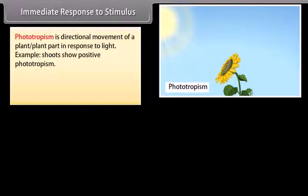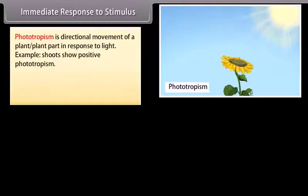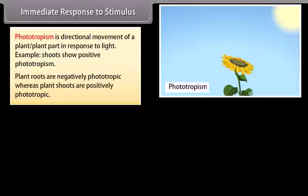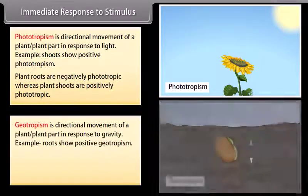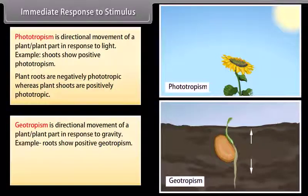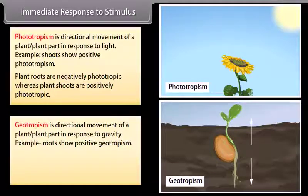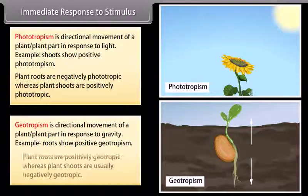Phototropism is the directional movement of a plant or plant part in response to light. Geotropism is the directional movement of a plant or plant part in response to gravity. Example: roots show positive geotropism. Plant roots are positively geotropic, whereas plant shoots are usually negatively geotropic.